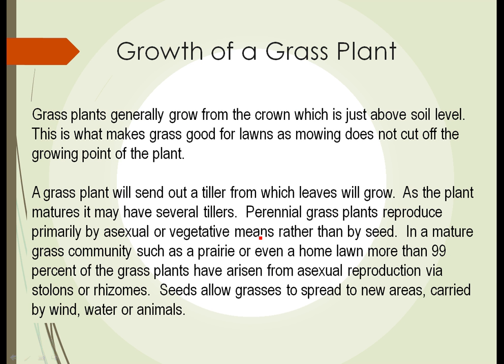Grass plants typically grow from the crown, just above the soil level. They send out tillers, and the leaves grow from the tiller. As grass plants mature, they can have several tillers. Perennial grass plants, like the type of grass that makes up your lawn, reproduce primarily vegetatively or asexually, as opposed to by seed. In a mature grass community like your lawn or a prairie, 99% or more of the grass plants have arisen from asexual reproduction via stolons or rhizomes. Grasses typically use seeds to spread to new areas, carried by wind, animals, or water, until they land in a suitable position for growth.